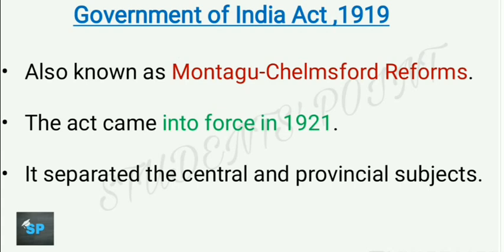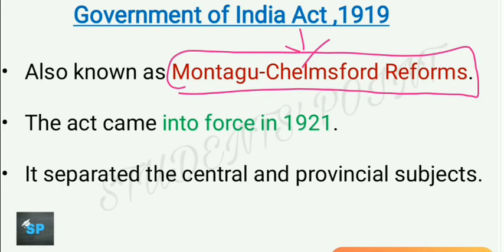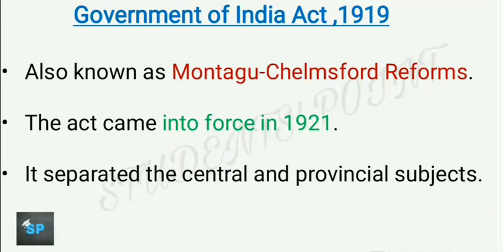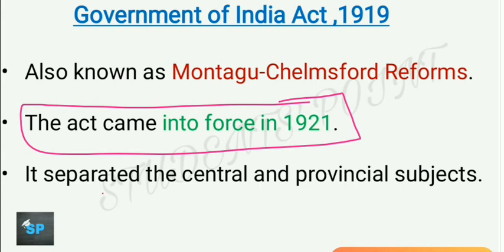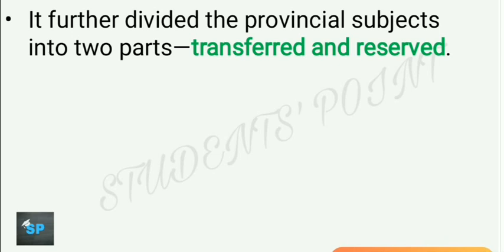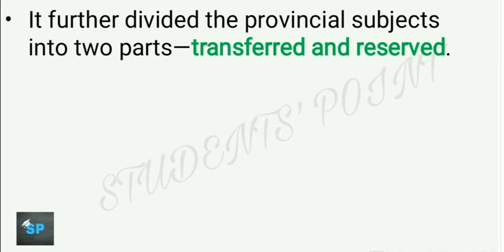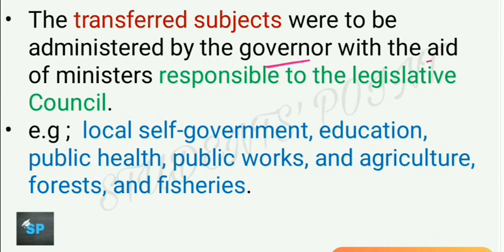Now we will see the Government of India Act 1919, also called the Montagu-Chelmsford reforms, named after Montagu, the then Secretary of State for India, and Lord Chelmsford, the then Viceroy of India. This act came into force in 1921. It separated the central and provincial subjects, and these provincial subjects were further divided into two parts: transferred and reserved. Non-official members in legislative councils were mainly Indians while official members were mainly Britishers appointed by the British government.